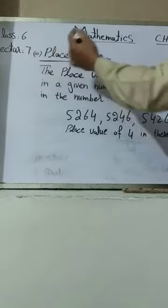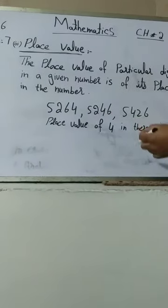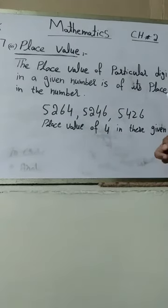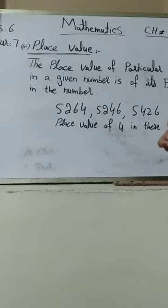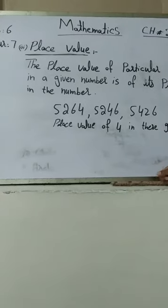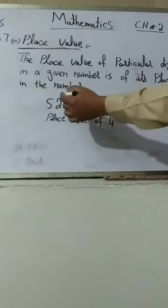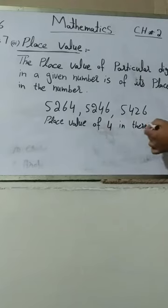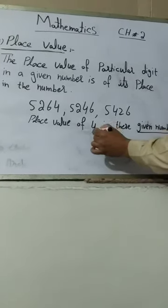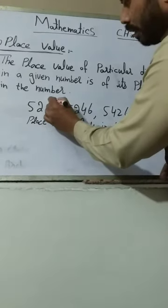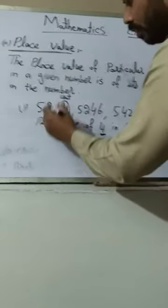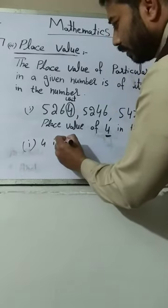Now let us talk about place value. Place value refers to the value of a digit based on its position in the number. We will discuss places such as unit, 10, 100, 1000, ten thousand, and lakh. For example, in the number 5,264, the digit 4 is in the unit place, so we check each digit's position.